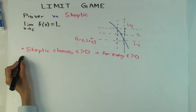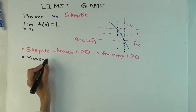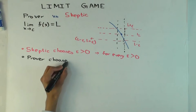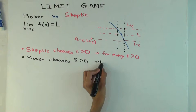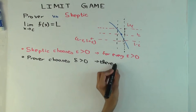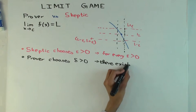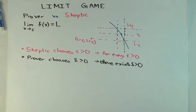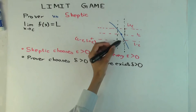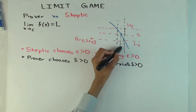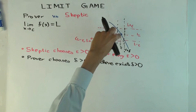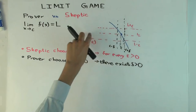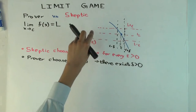The prover then chooses delta greater than zero. This corresponds to the next part of the definition, which says: there exists delta greater than zero. In this picture, we have the value c, c plus delta, and c minus delta. So c is the x-coordinate and l is the function value — or the limit of the function value.